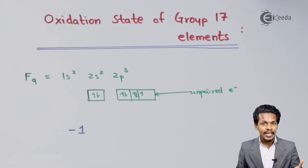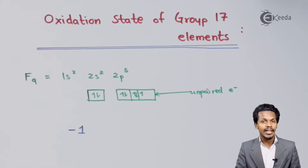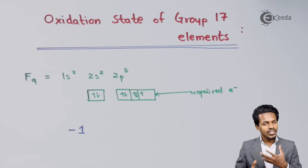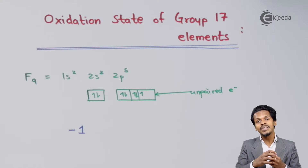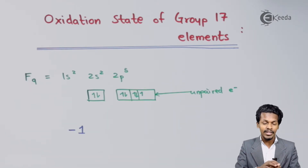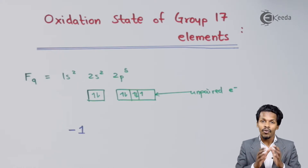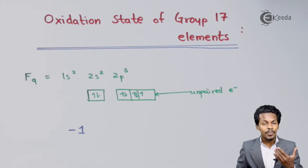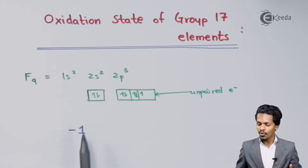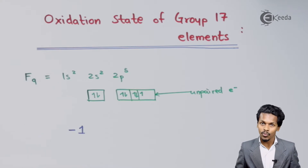Fluorine cannot be positive because there is no other element which is more electronegative compared to Fluorine. So suppose if a particular halogen item is combined with another element which is more electronegative compared to the halogen, then the oxidation number of that halogen could turn positive. But for Fluorine it is always negative, that is minus 1.